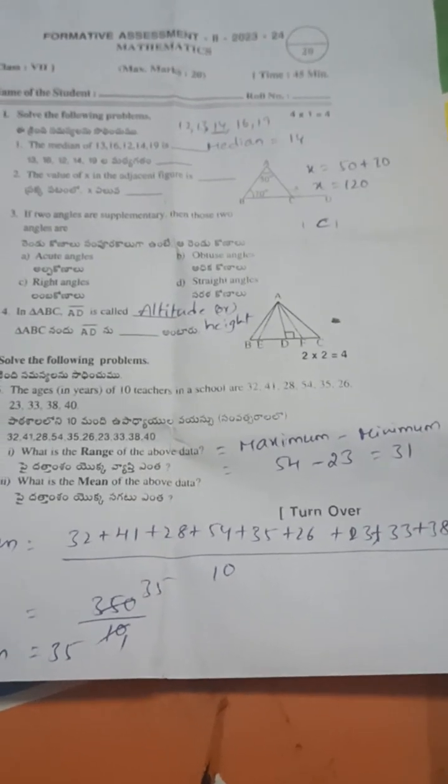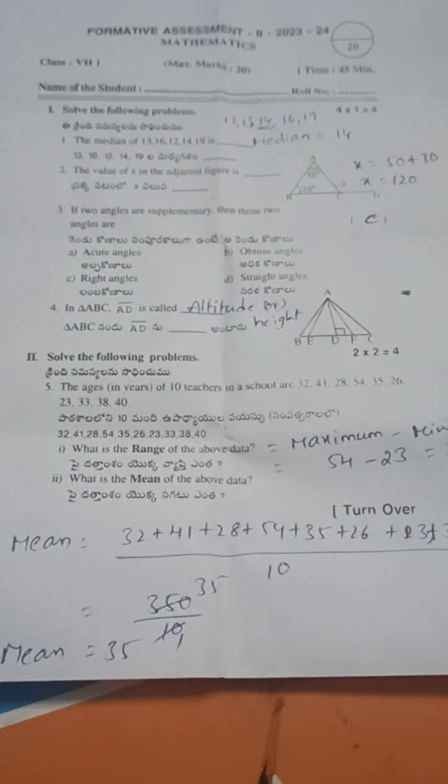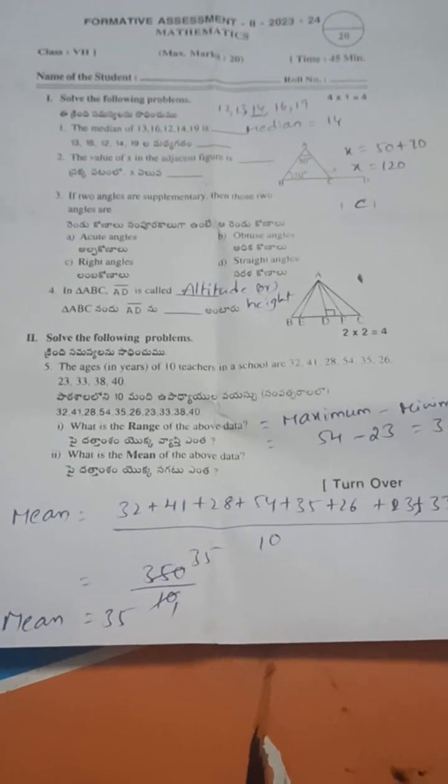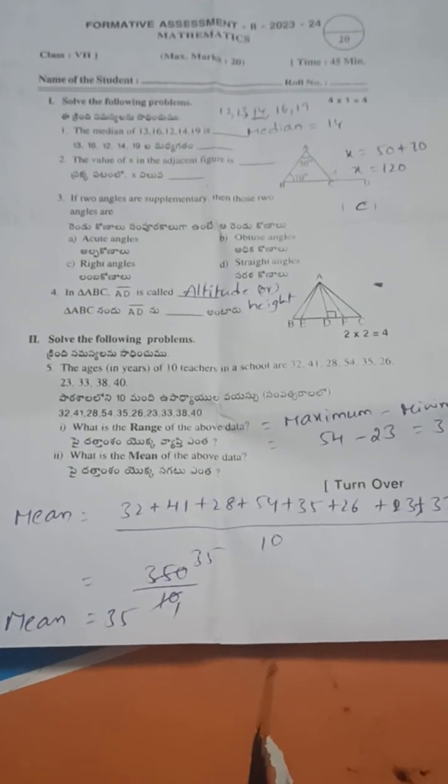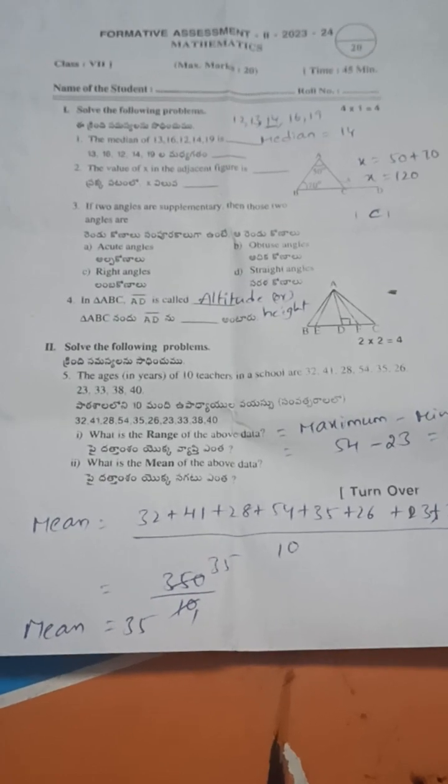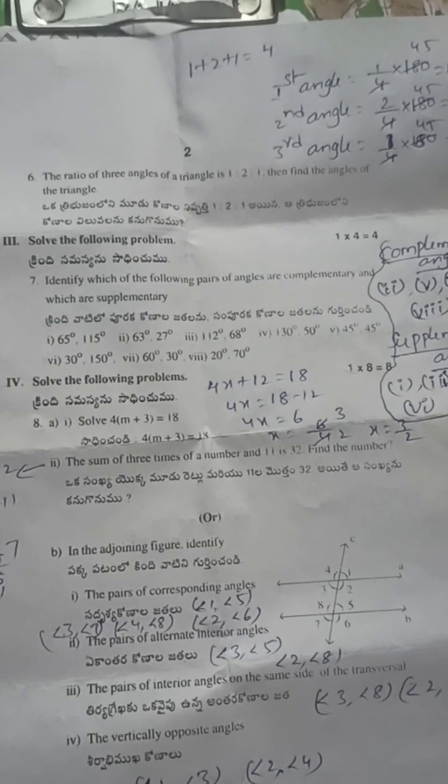Maximum is 54, minimum is 23, that is 31. Next, mean: sum of observations by number of observations. The sum of observations is 350, number of observations is 10, so 350 by 10, that is 35.